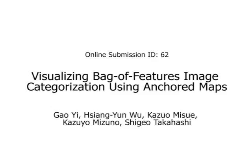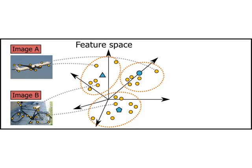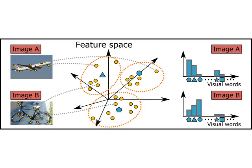This demonstration video presents how we can visualize the bag-of-features model using the uncut map representation. In the bag-of-features model, each image is represented as a sparse vector of local representative features called visual words, each of which serves as the basis for composing the high-dimensional image feature space. For visual understanding of the image categorization conducted in this bag-of-features model, we need to transform this high-dimensional image feature space to the 2D screen space, while retaining the underlying semantics of the given image dataset.